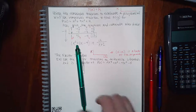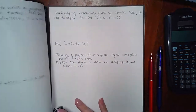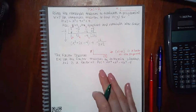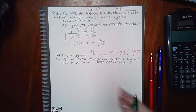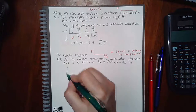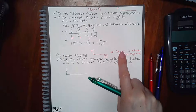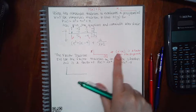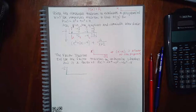It says use the Factor Theorem to determine whether x + 2 is a factor of this polynomial. If I get zero, the answer is yes; if I don't get zero, the answer is no. The k value is always the opposite sign of what's inside the factor, so if I have +2 in the factor, I put −2 as my k.